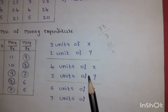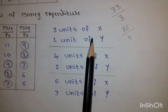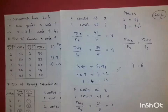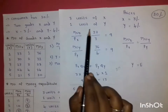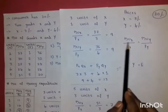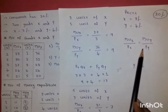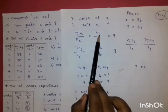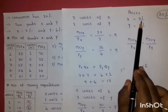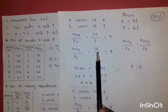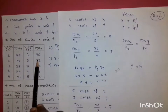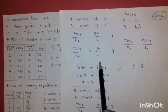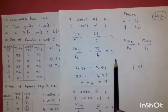This combination satisfies all three conditions. Now let us check the other two combinations. For 3 units of X and 1 unit of Y: MUx = 27, so 27/3 = 9; MUy = 36, so 36/4 = 9. The first condition is satisfied here as well.